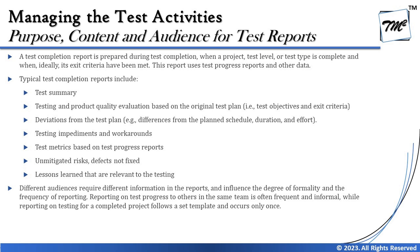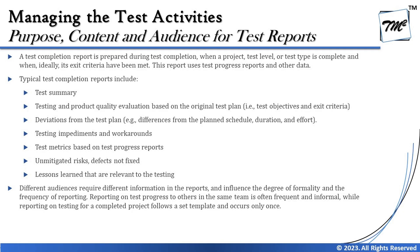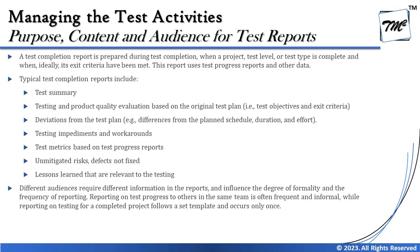The test completion report also includes deviations from the test plan — such as differences in schedule, duration, effort, or cost — testing impediments and workarounds, metrics based on progress reports, unmitigated risks, and defects not fixed. Defects not fixed are those which remain unresolved or are declared as known defects to be addressed in upcoming versions or maintenance releases. Lessons learned relevant to testing may also be included.